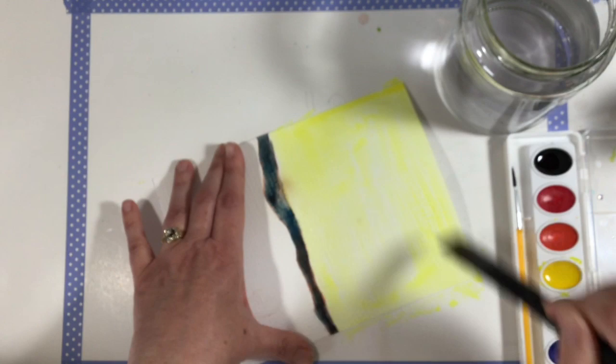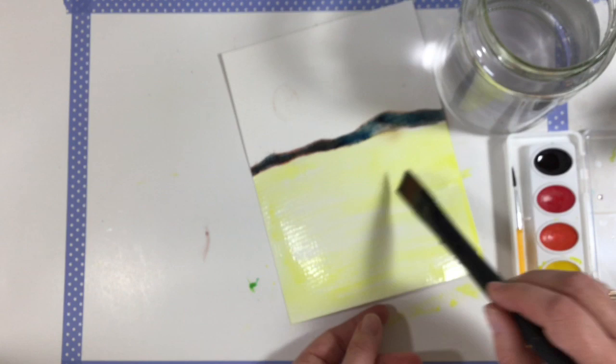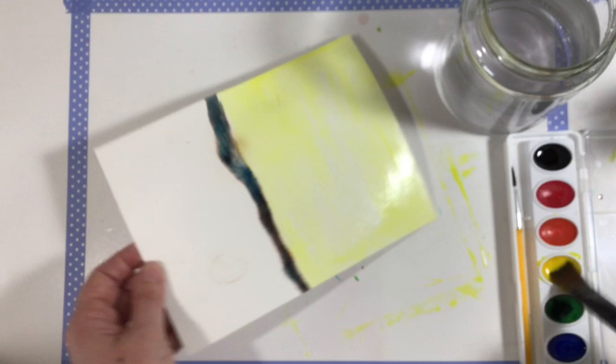Now you want to use a light touch with this so that your oil pastel reflection in the water there still shows up. If you use a heavy touch it's just going to go right over that reflection and it's going to disappear, so you want to use a really light touch with that paint.